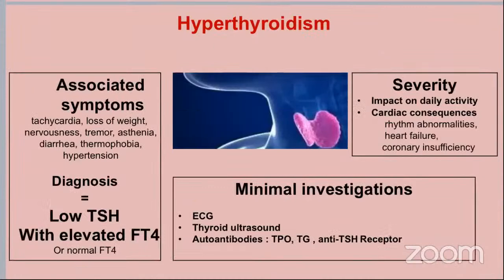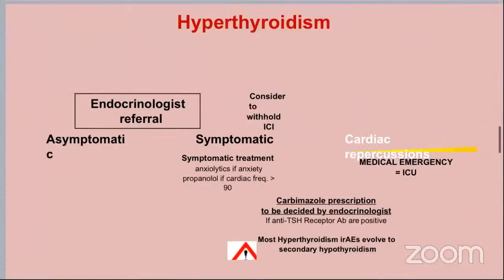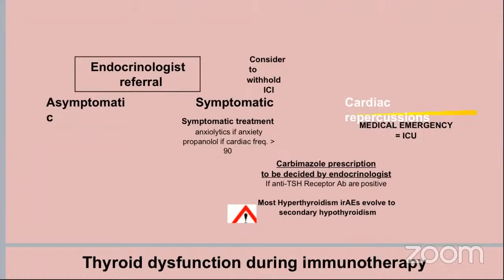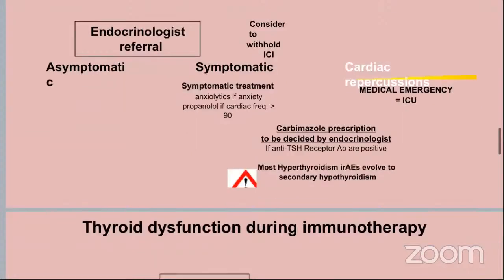Hyperthyroidism can also occur. Associated symptoms include tachycardia, weight loss, nervousness, tremor, asthenia, diarrhea, and hypertension. Diagnosis is through low TSH with elevated or normal T4. The case is considered severe if there is any impact on daily activities or cardiac problems such as heart failure, arrhythmia, or coronary insufficiency. For management: consider endocrinologist referral. If asymptomatic, monitor. If symptomatic, withhold treatment, add anxiolytic for anxiety, propranolol if cardiac frequency is above 90, and if there is any cardiac problem, consider it an emergency with referral to ICU.